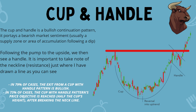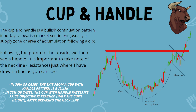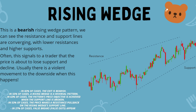Cup and handle is another one I really enjoy — you see a lot of these during bear phases and at the beginning of bull markets. It's a bullish continuation pattern that portrays a bearish sentiment for a short time frame. The cup area indicates a re-accumulation zone following a dip, after which we usually get a nice pump. We create the handle, break through the descending channel, and retest the neckline of the cup. In 79% of cases the exit is bullish, and 73% of cases we achieve the price objective by measuring the depth of the cup and adding it to the neckline.